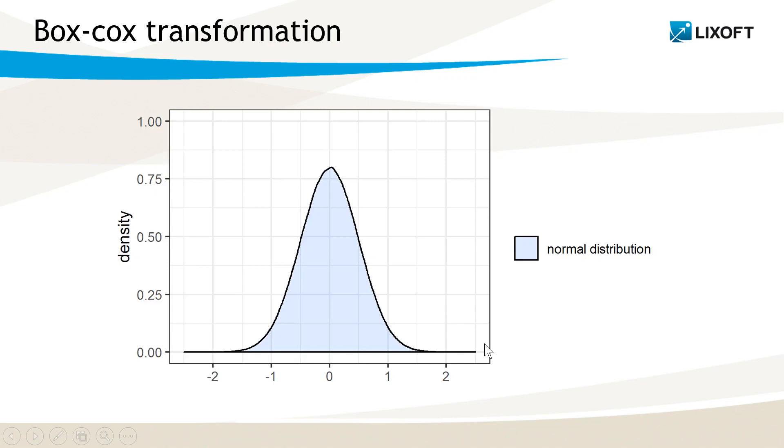So that would be the normal distribution. If I transform it using a Box-Cox transformation with lambda equals 1, then I get something like this, so that is right skewed. And on the opposite, if I take lambda equals minus 1, then the transformed distribution is left skewed. If lambda tends to 0, we recover the normal distribution, and larger values of lambda lead to larger skewness.